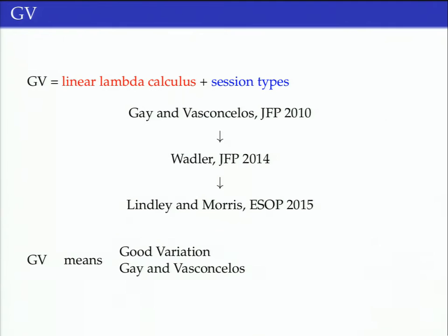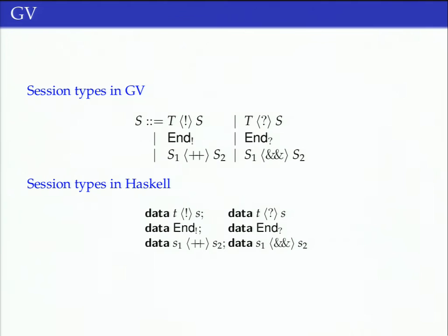Now I'm finally getting onto the language that we're going to embed, GV. This is the language that Garrett presented the other day. It's based on this functional language with session types that Simon Gay and Vasco Vasconcelos came up with. Then Phil Wadler showed that it corresponded to his logical account of session types. Subsequently, Garrett and I gave a semantics to this language. It stands for either good variation or Gay and Vasconcelos. Finally, to the session types in this language that you've already seen in the examples, it's quite straightforward to represent these in Haskell.